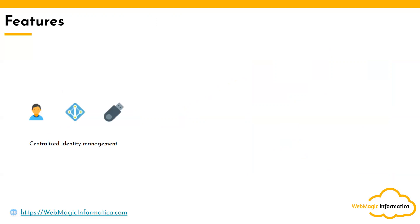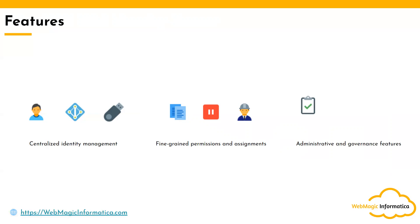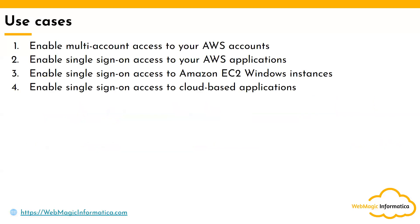The features this service provides include: centralized management where you create all the identities in one place; integration with third-party IdPs; and integration with multi-factor authentication. It also provides fine-grained permission and assignments — you can assign policies or roles based on job function. You can integrate AWS CloudTrail for recording user activities, which provides governance. It integrates with AWS Organizations as well, and can be integrated with GuardDuty for detecting threats or anomalous activity in your account.